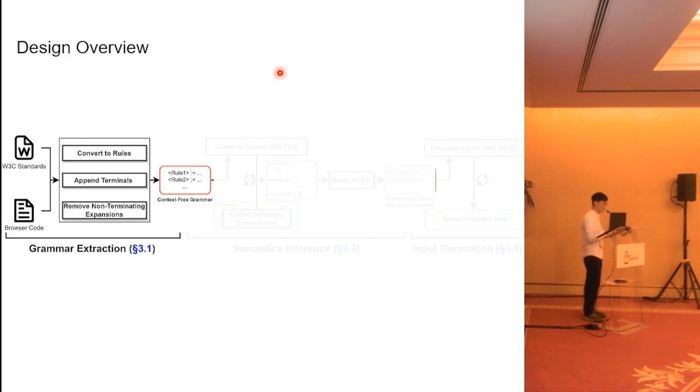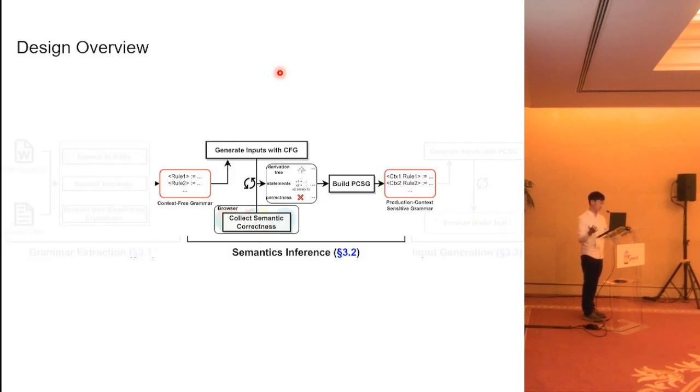Although the second phase, the semantic inference, will lose some semantic information and may let the search space smaller, I think it's quite worth to try the semantic inference because if we don't use it, it will generate a large number of semantically incorrect test cases. So that's a trade-off, actually.